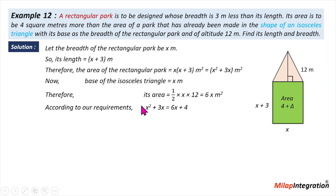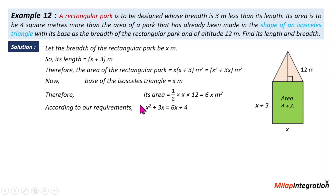The area of the rectangle is equal to 4 plus the area of the triangle. So x² plus 3x equals 6x plus 4. Rearranging, we get x² minus 3x minus 4 equals 0. Now we have a quadratic equation.